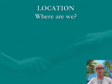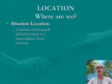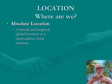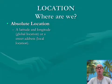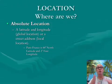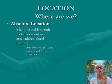The first theme is location. Location answers the question: where are we? There are two kinds of location. There is an absolute location — and absolute means exactly. This is exactly where something is. It's a pinpoint, an address, or that specific place where latitude and longitude intersect. It could be a global location on a GPS system. Paris, France, for instance, is at 48 degrees north — that means 48 degrees above the equator — and 2 degrees east of the line of longitude that runs through Greenwich Village.